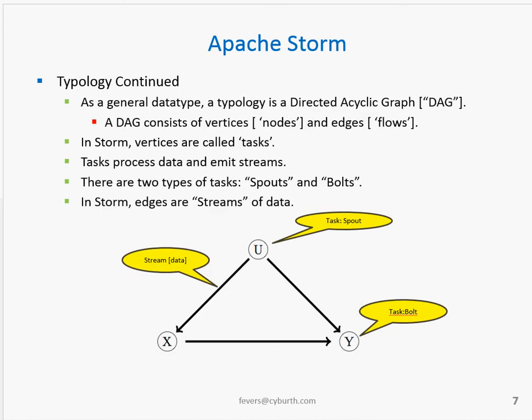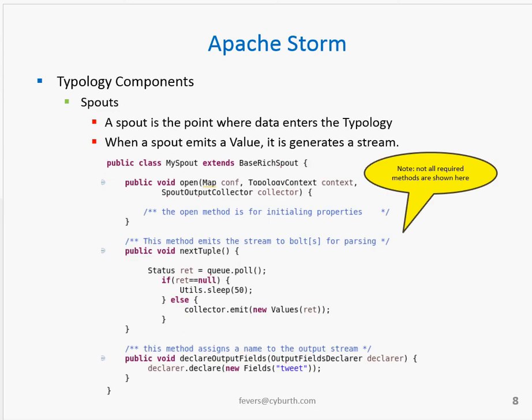A typology is understood as a directed acyclic graph, also known as a DAG. A DAG consists of vertices, usually called nodes, and edges, which we refer to as flows. In STORM, the vertices are called tasks, and there are two types of tasks. Tasks receive data input and emit streams as data output. The two types of tasks are called spouts and bolts, each of which takes an input of data and emits output after some kind of a transformation. The edges of the DAG are called streams, and these streams are the communication vehicles between the different tasks.